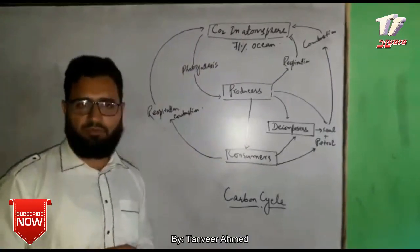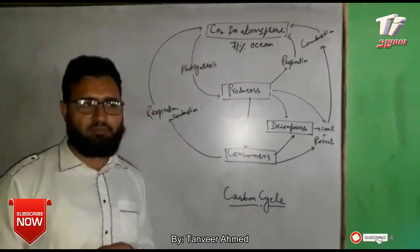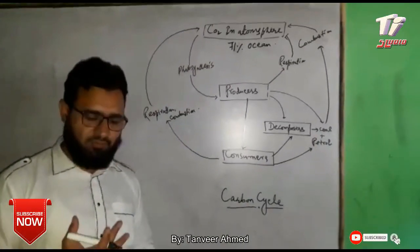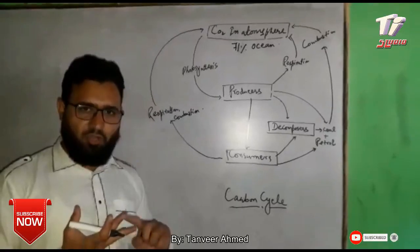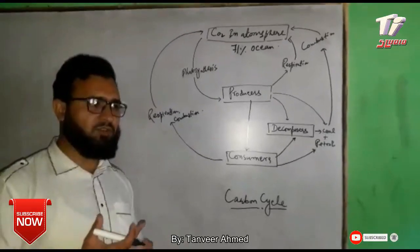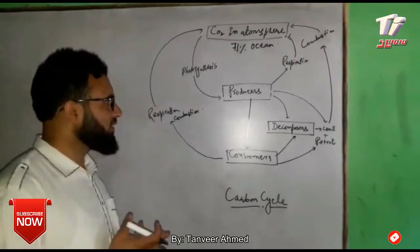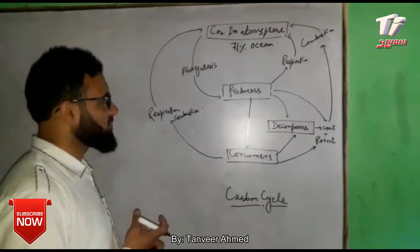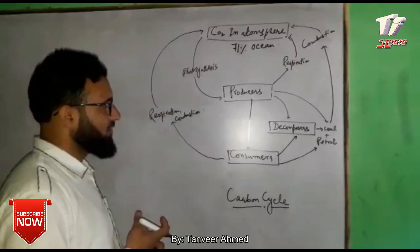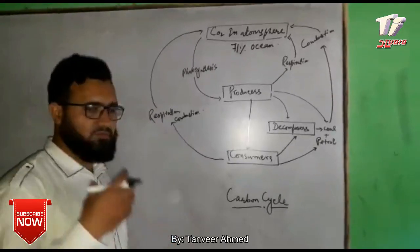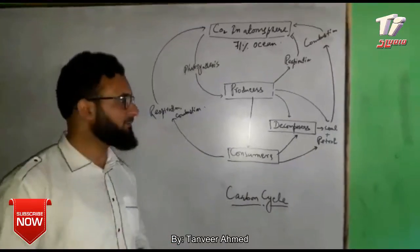In photosynthesis, carbon dioxide is used, water is used, and sunlight is used. This can be used by plants to synthesize food.